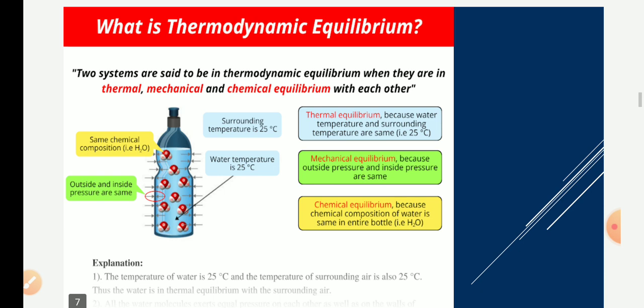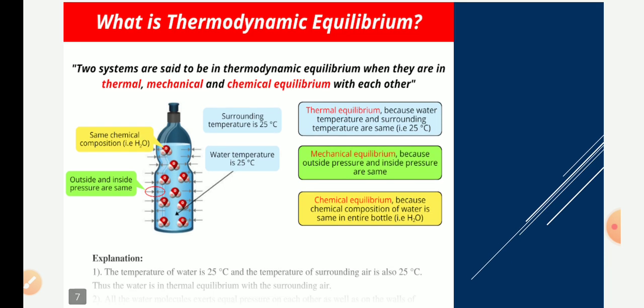What is thermodynamic equilibrium? We know about thermal equilibrium — if the temperature remains constant throughout a process, it is called thermal equilibrium. But thermodynamic equilibrium means two systems are in chemical, thermal, and mechanical equilibrium with each other. Then we call it thermodynamic equilibrium.